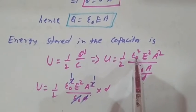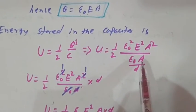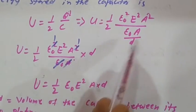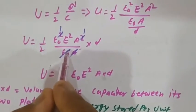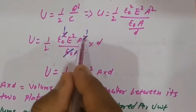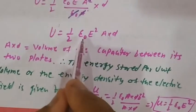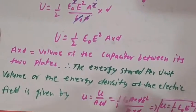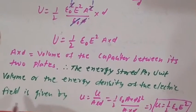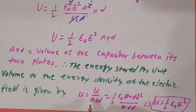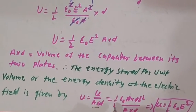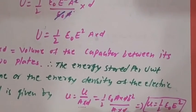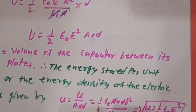Substituting into U = (1/2)Q²/C, we get U = (1/2) × (ε₀EA)² / (ε₀A/d). Simplifying, ε₀ and A cancel, giving U = (1/2)ε₀E² × A × d. Here A×d is the volume of the capacitor between its two plates.